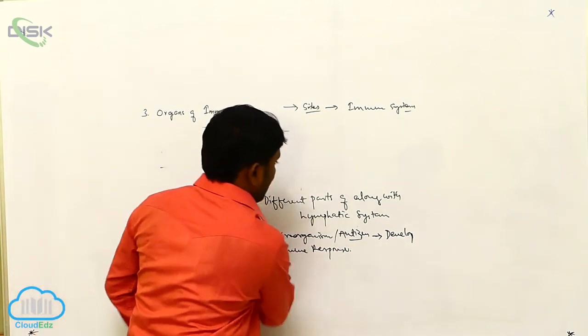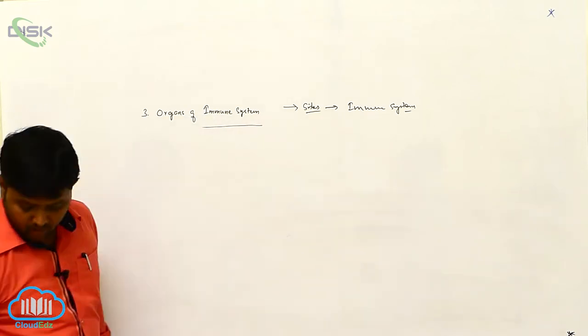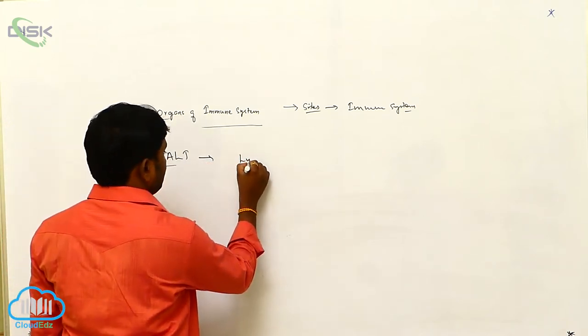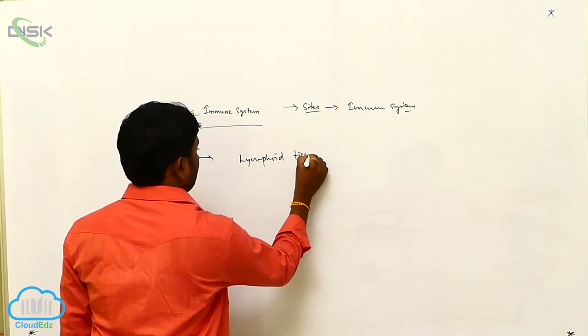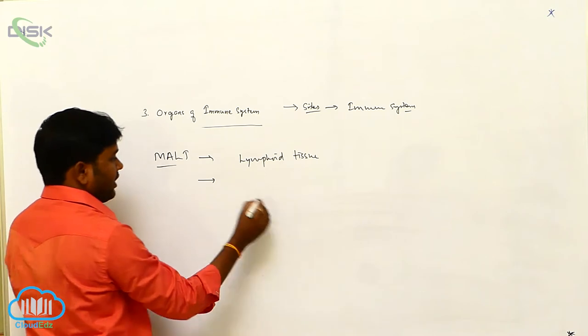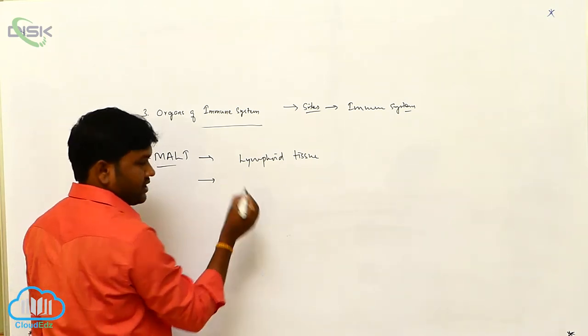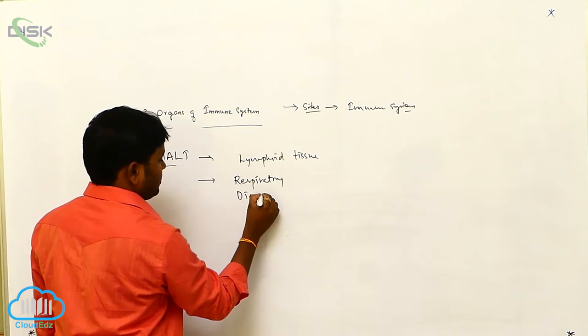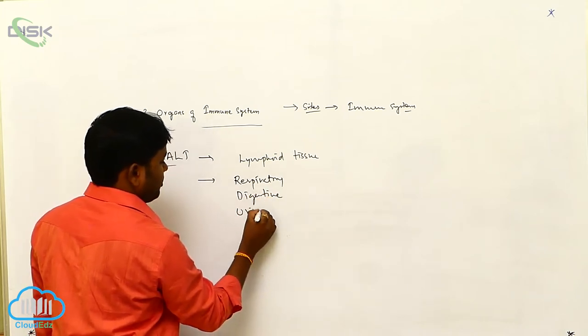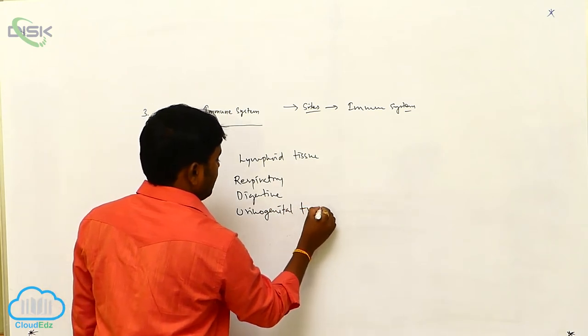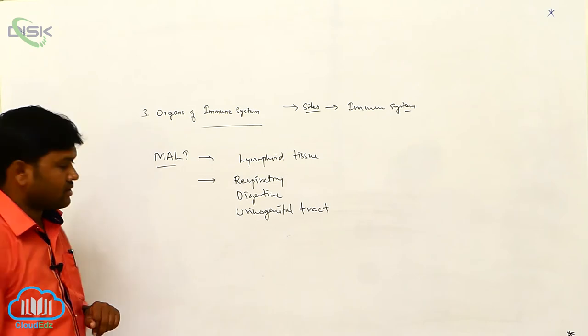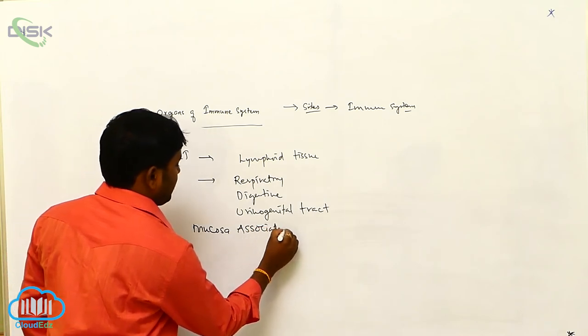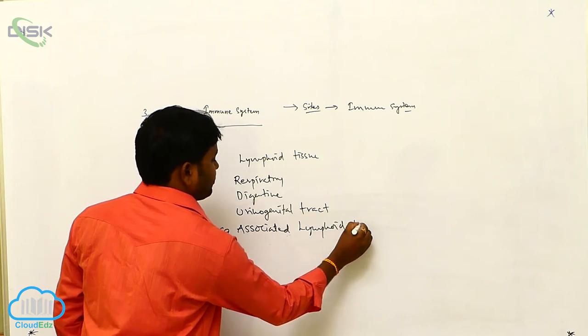Next, MALT - M-A-L-T. So MALT is a lymphoid tissue. It is located at different tracts like major tracts like respiratory, digestive, and urinogenital tracts. So the full form of MALT is mucosa associated lymphoid tissue.